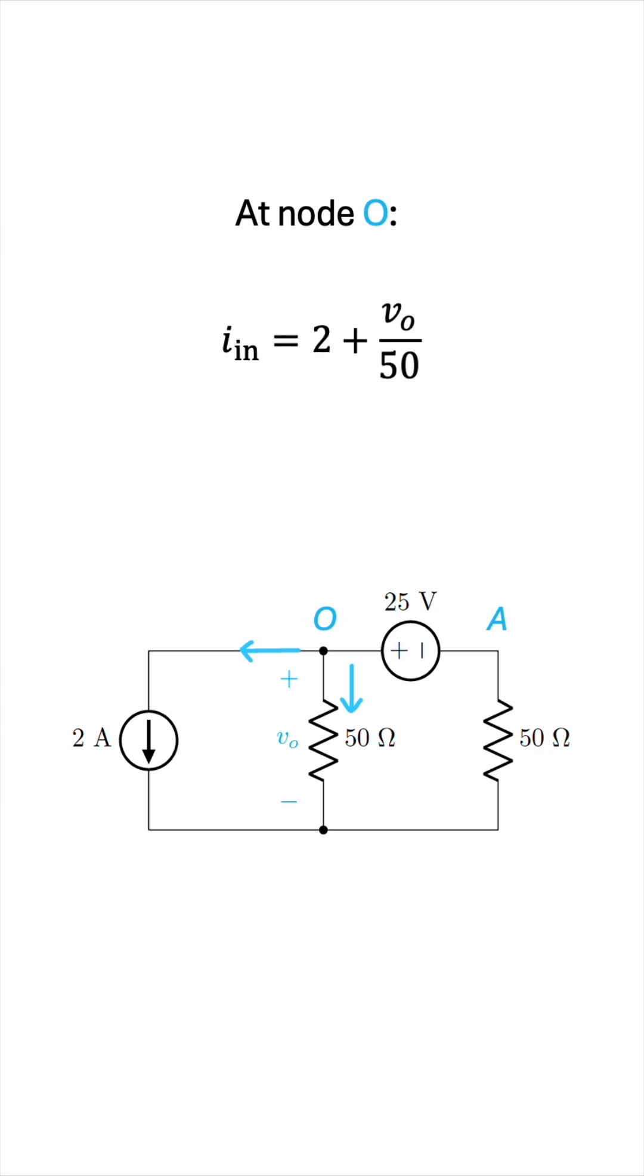So those are the two currents leaving the node. What currents are entering the node? There's only one current entering the node and it's this current over here. But how do we find this? We can't really say 25 because that's the voltage source over there, not the current source.